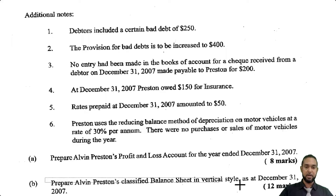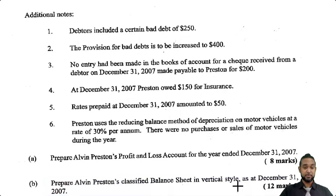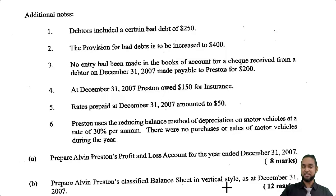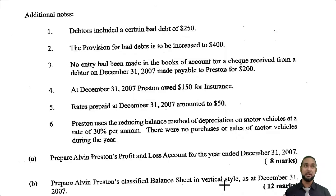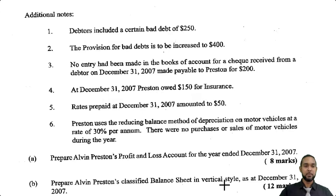Part B wants us to do a balance sheet in a vertical style as at December 31st, 2007. You might be wondering why they specify vertical style — because the balance sheet was originally done in a horizontal style, with assets on the left-hand side and capital and liabilities on the right-hand side. We don't use that format anymore, but it's not to say it's not worth knowing.